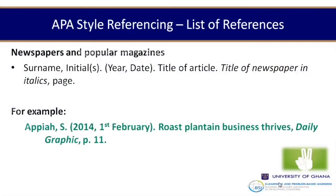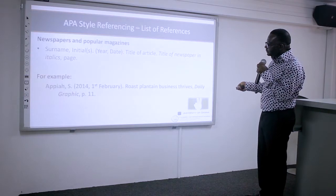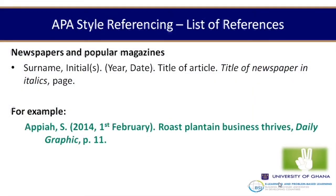For a newspaper article in APA style: write the author's name and initials, the year published, the date, the title of the article, and the name of the newspaper in italics, then the page. For example: Appea, S. (2014, 1st February). Rose Plantain Business Thrives. Daily Graphic, p. 11. If the article is from a specific section, you add the section name before the newspaper title.